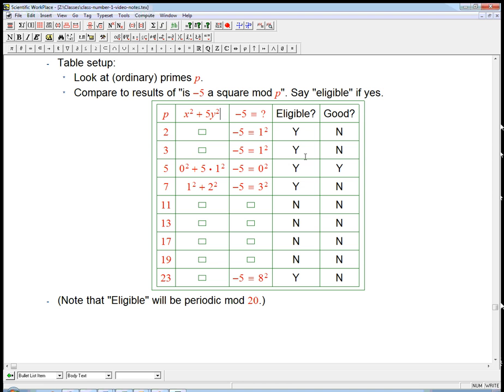But what we had before is that these columns matched up, basically. That anything that was eligible was actually good. And now we see that it's actually failing big time.